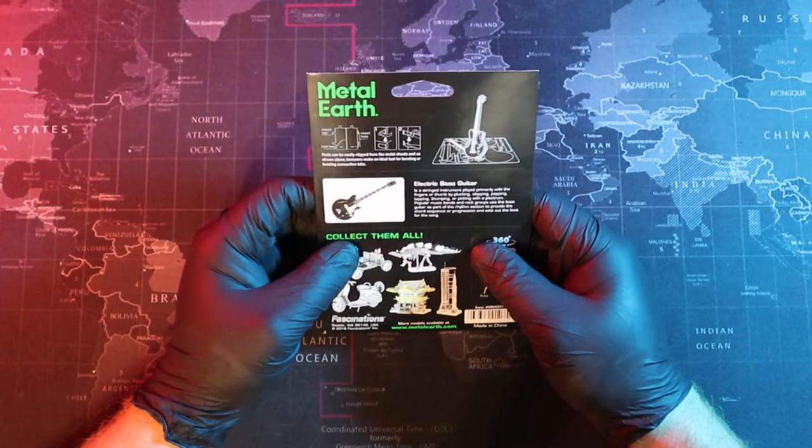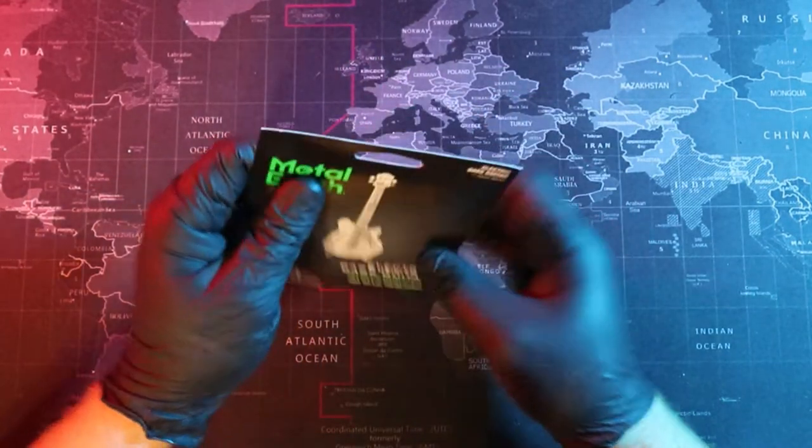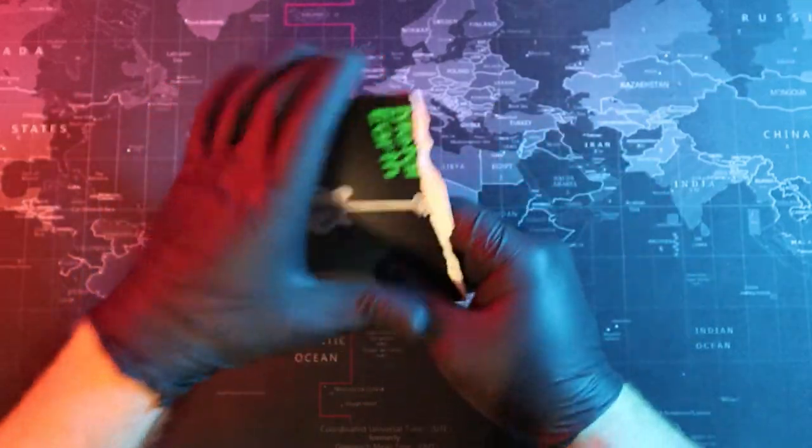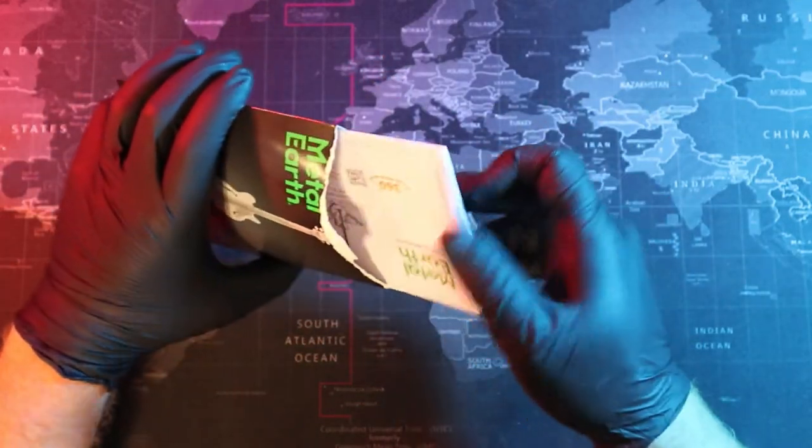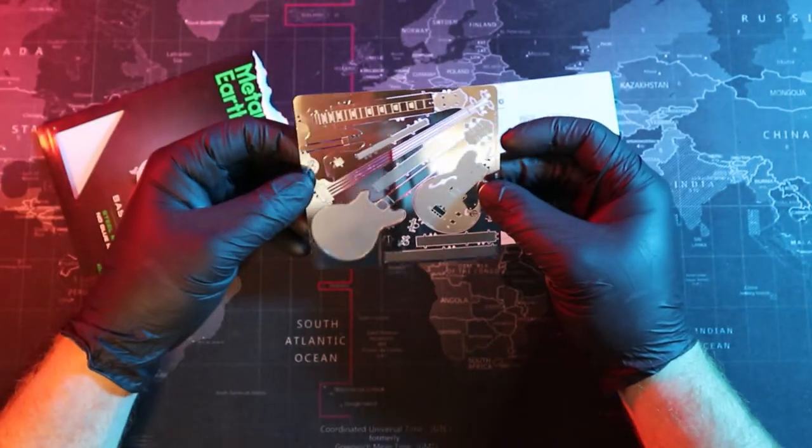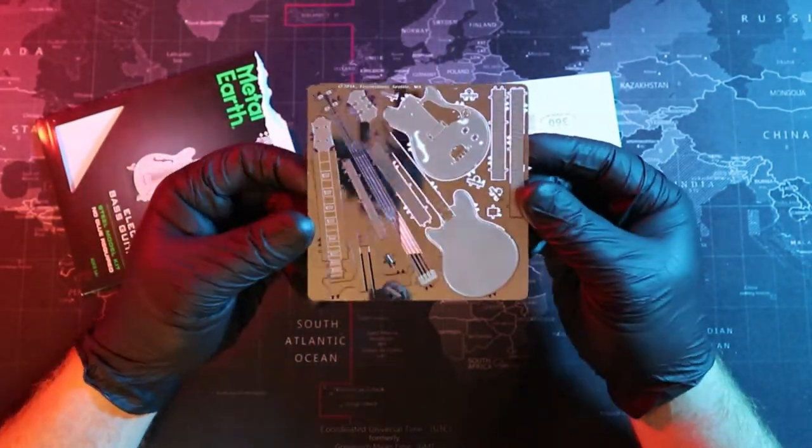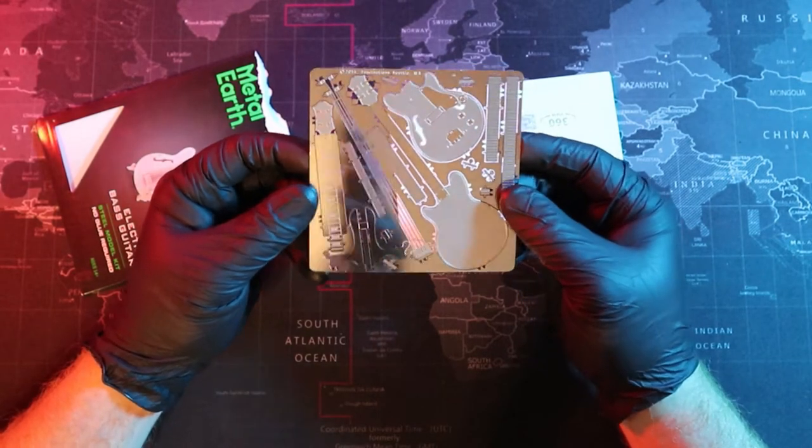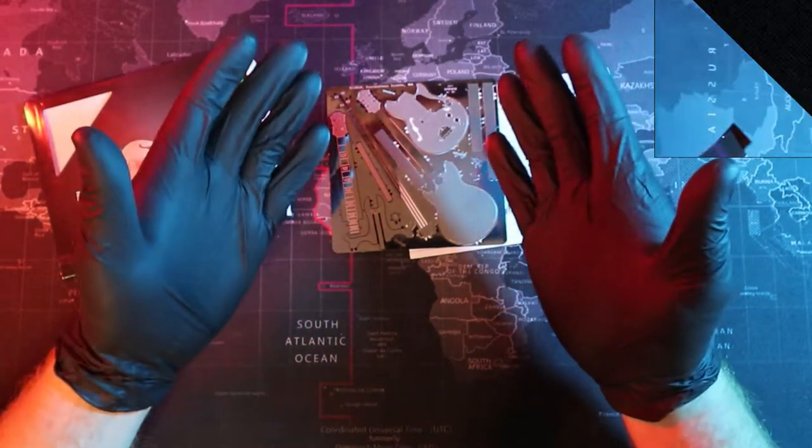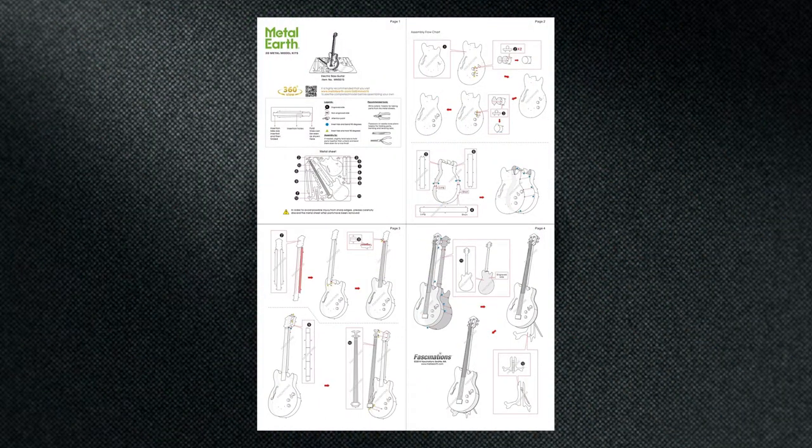GrooveBuilders, let's go ahead and open up our package. We have our instructions, and we have our one sheet of metal. And look at this bass guitar. That looks really neat. Let's take a closer look at our instructions. Alrighty, we have just one page of instructions, and 13 parts.